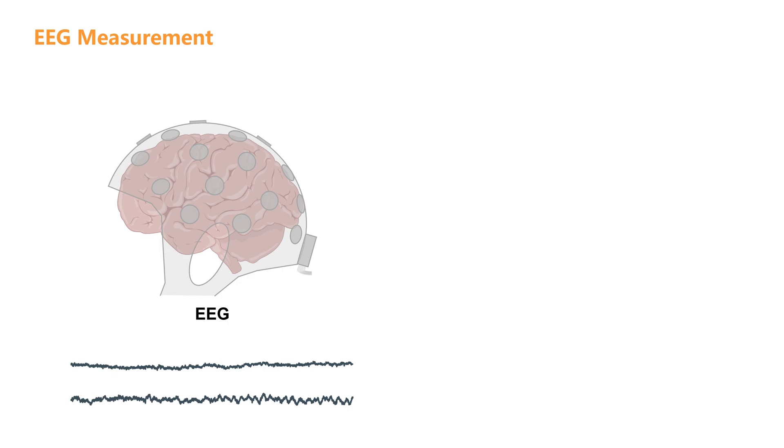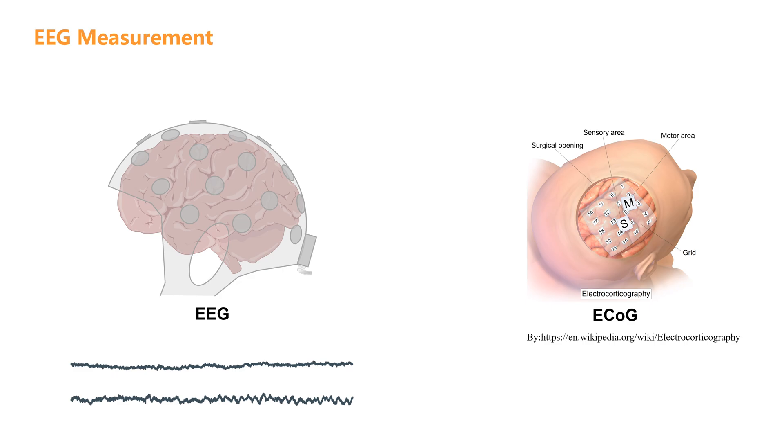By merely attaching a few electrodes to the scalp, EEG measurements are entirely non-invasive. On the other hand, invasive techniques like electrocorticography, or ECoG, require going inside, much like a specialized task force.